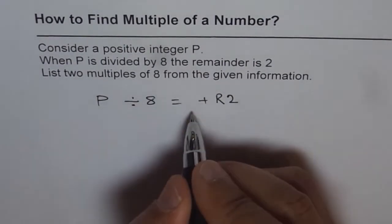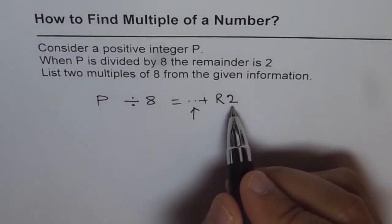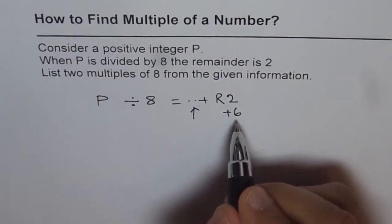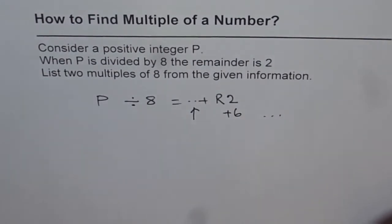So, one multiple is this number, right? And the other should be? Well, if 2 is a remainder, if I add 6 to it, then the next number will be a multiple of 8, right?